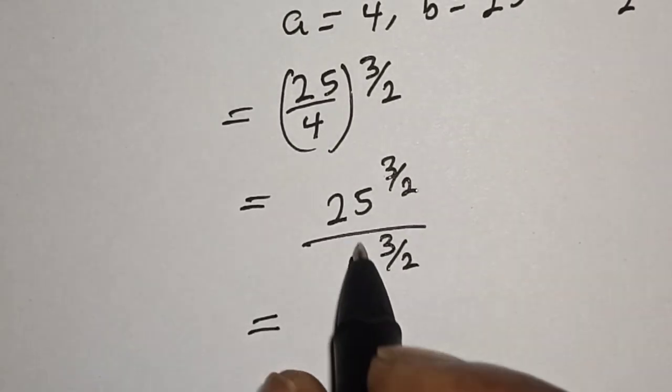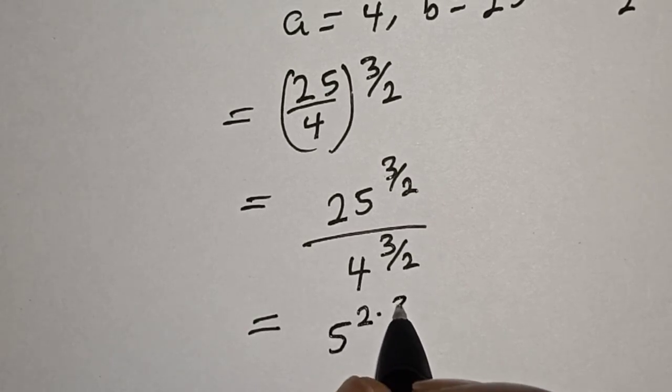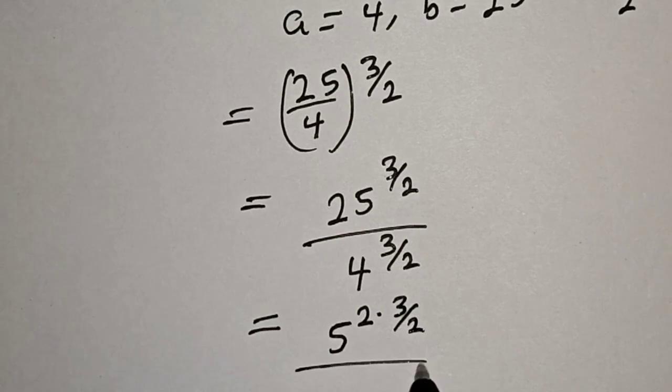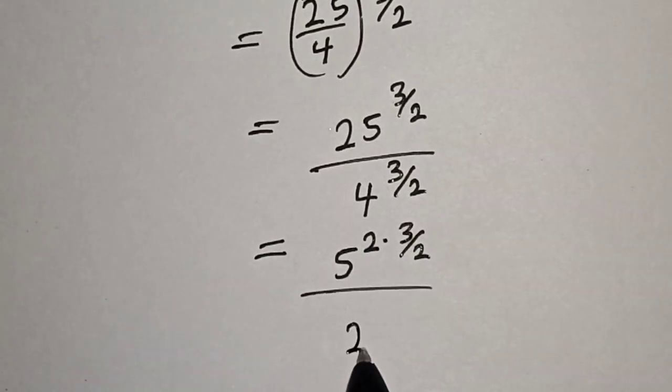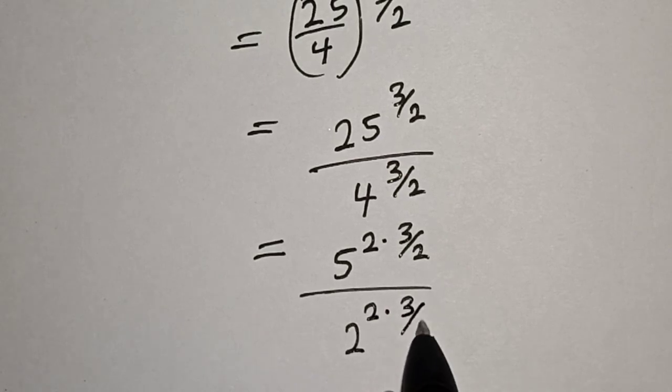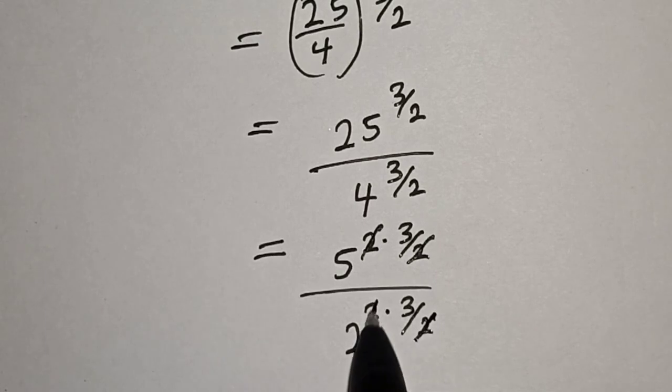Then this is equal to 25, which can be written as 5 squared, multiplied by 3 over 2, divided by 4 raised to the power of 3 over 2. 4 can be written as 2 squared, multiplied by 3 over 2. Then this will cancel with this, and this will cancel with this.